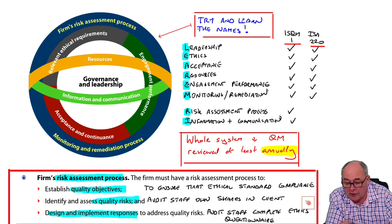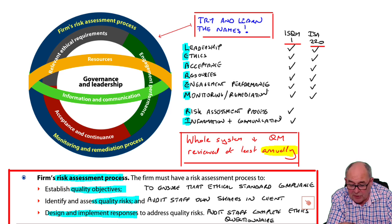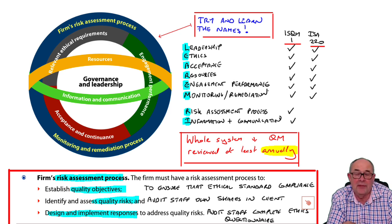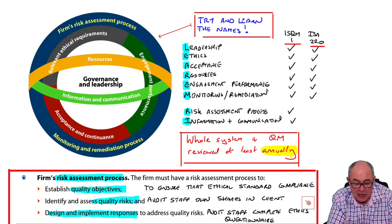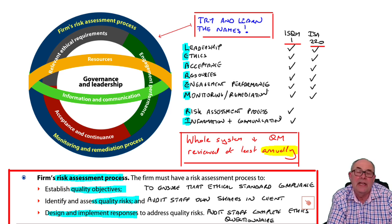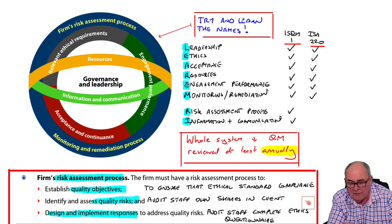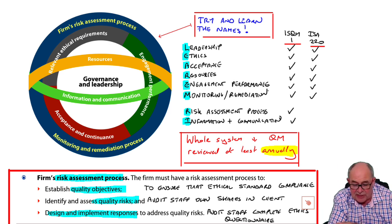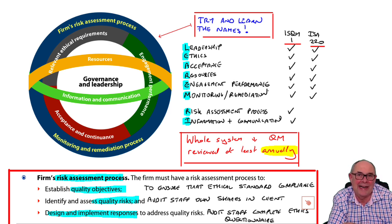The extra two in ISQM 1 are at the bottom: a risk assessment process, and information and communication. Try to learn the names, particularly because some have changed. For example, monitoring is no longer just monitoring — it's now monitoring and remediation. If you like mnemonics, you could use LEAEM for the basic six components in both quality standards, with the extra two R and I also in ISQM 1.